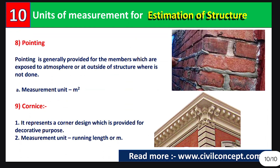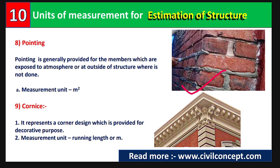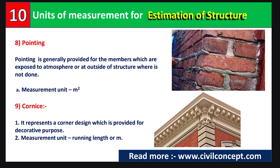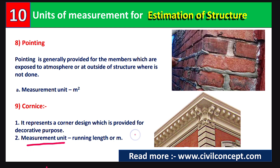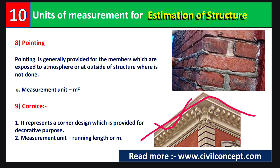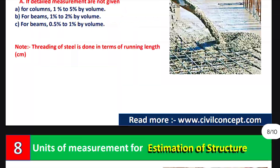Plaster work is always applied on both sides of the wall. The eighth topic is pointing. Pointing is provided for members exposed to the atmosphere or outside the structure where plastering is not done. In brick masonry, open empty joints are filled with mortar — this is known as pointing. Its measurement is taken in square meters. The ninth topic is cornice — a corner design provided for decorative purposes — measured in running meters or per meter.